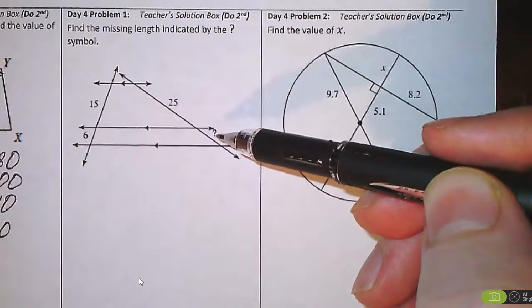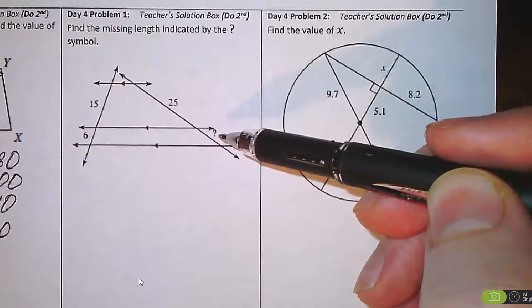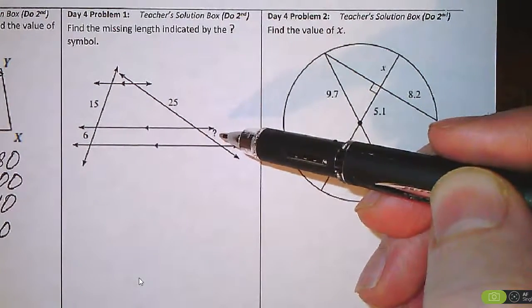To solve this, we can use the Triangle Proportionality Theorem, where we match corresponding pieces and create a proportion.